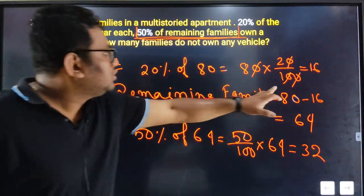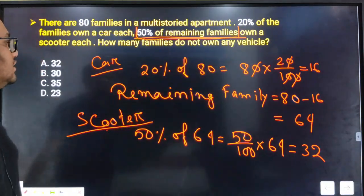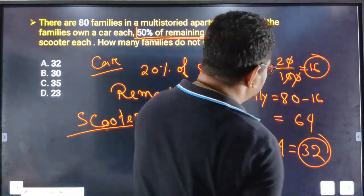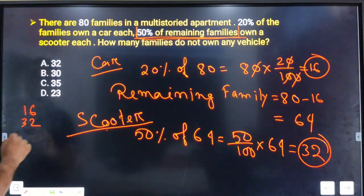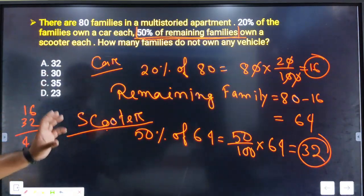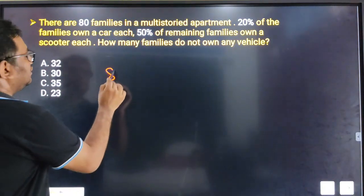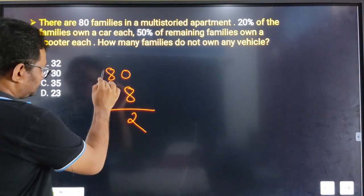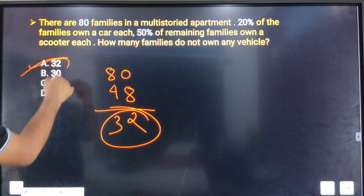So families owning either a car or a scooter: 16 plus 32 equals 48. The number of families owning neither is 80 minus 48 equals 32. Option A is the answer.